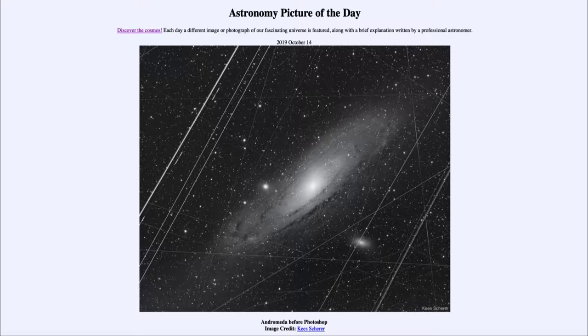Now the Andromeda galaxy is often photographed and we see lots of images of it, but not quite like the one we see today. This is kind of the beginning of the image. What do we see when we're first done?